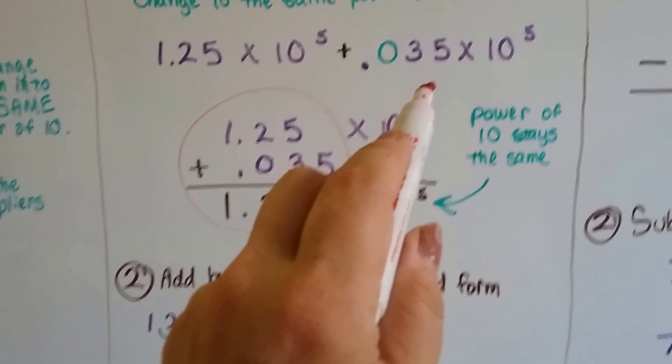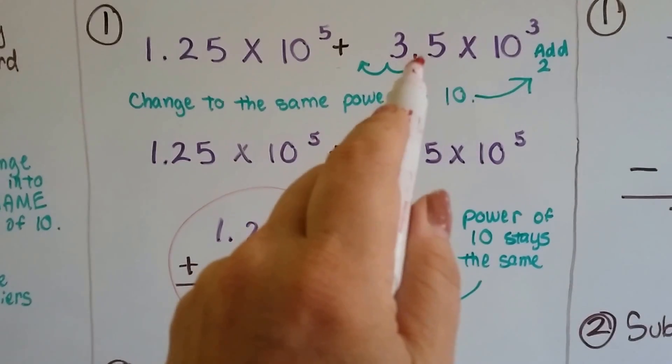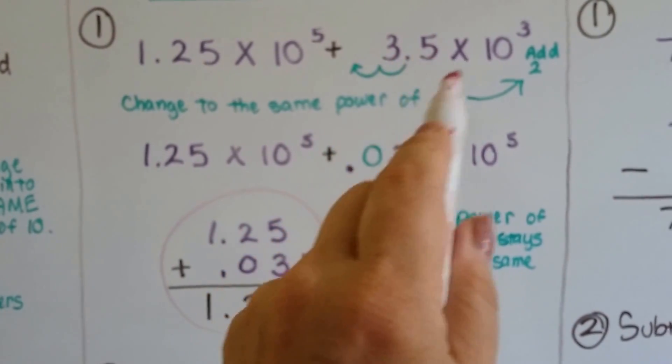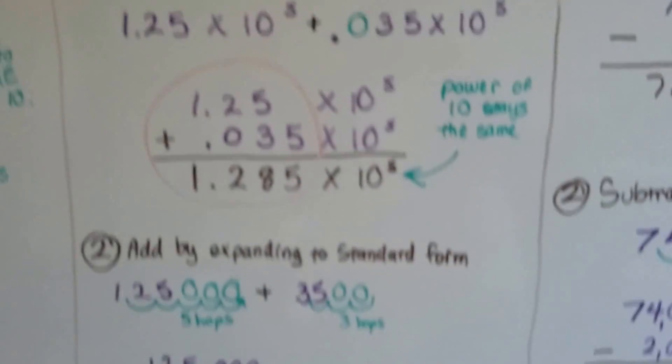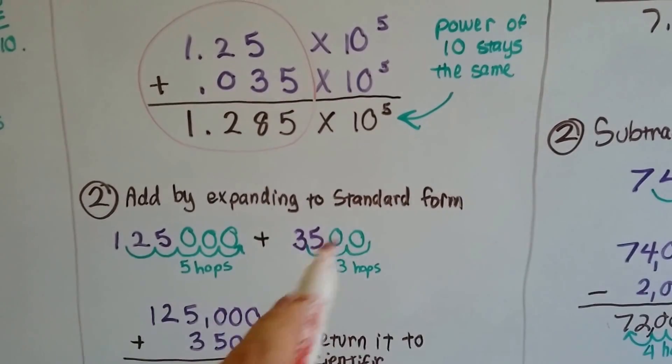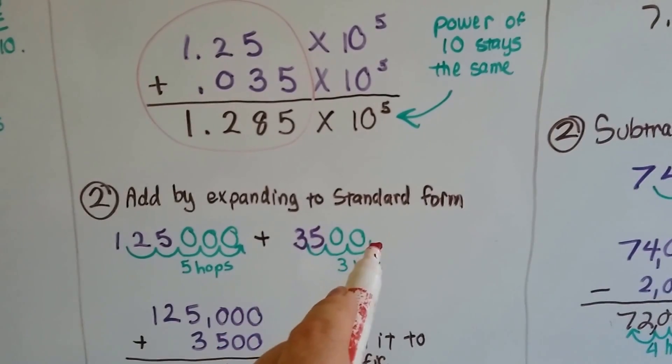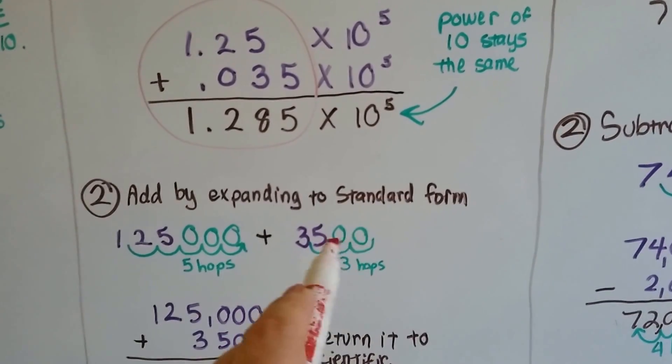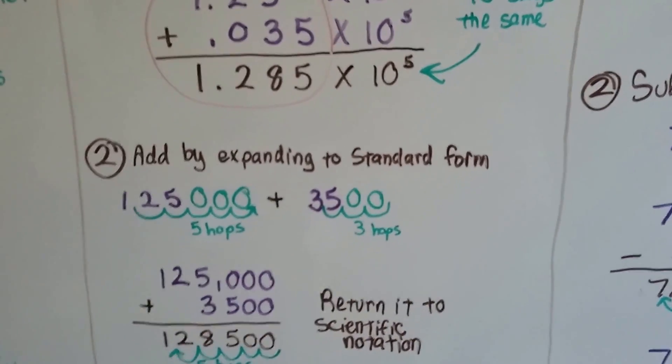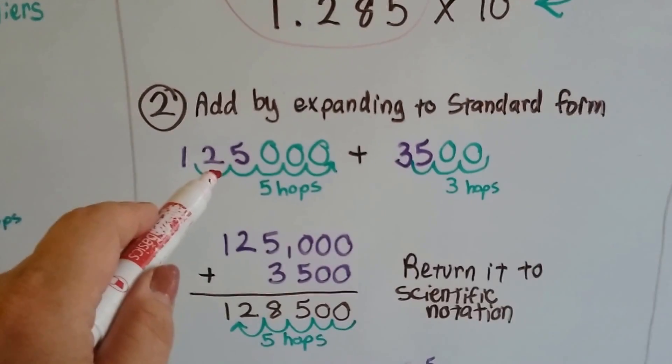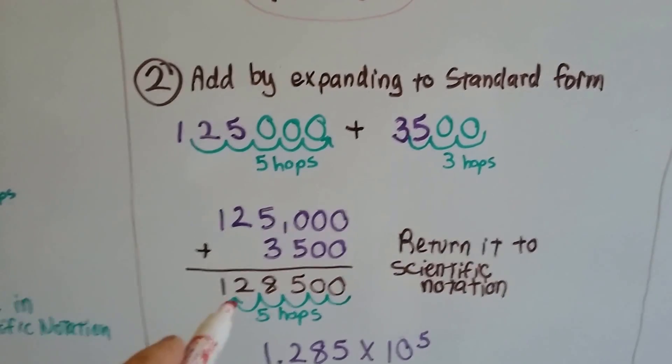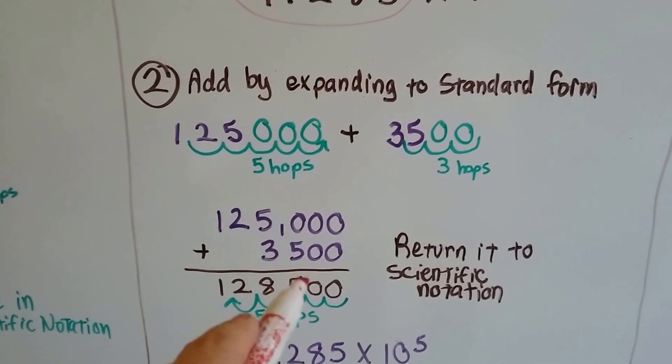And then the 3.5 right here, the original number 3.5 times 10 to the 3rd, we're going to move it because it's to the 3rd power. We're going to move it three hops: 1, 2, 3. Put two placeholder zeros here and now I've got 3,500. Now I can add the 125,000 and the 3,500 and I get 128,500.